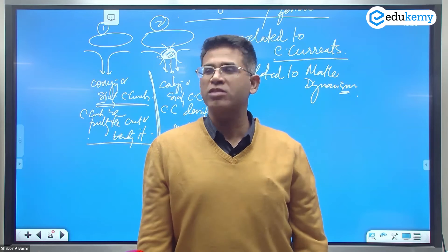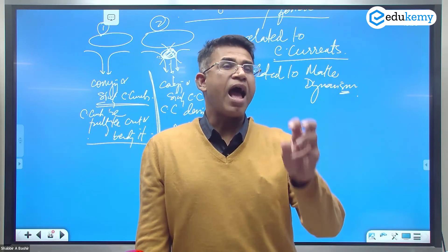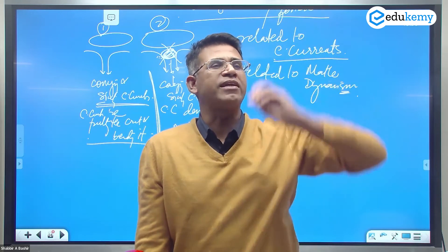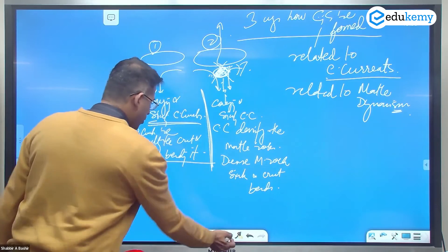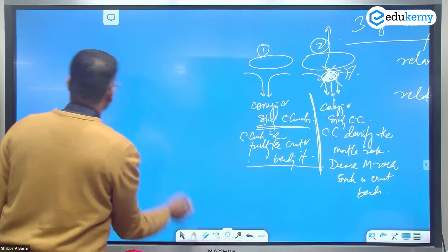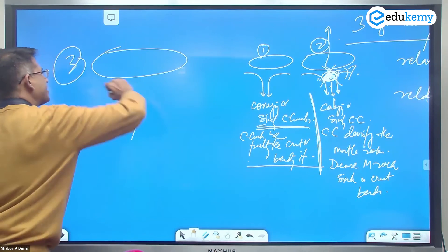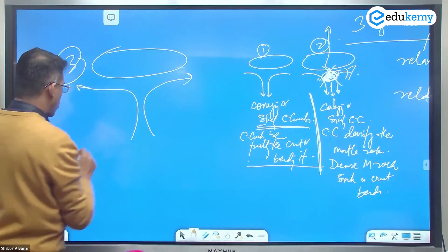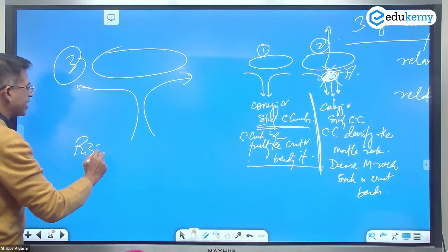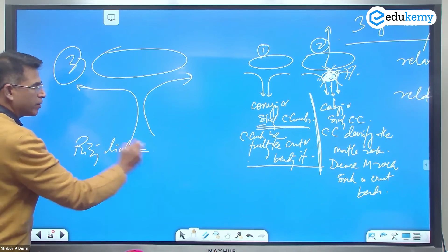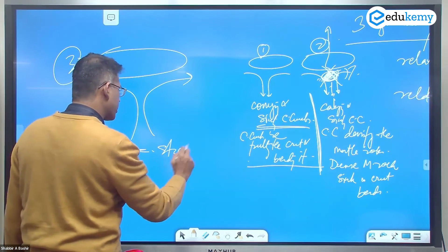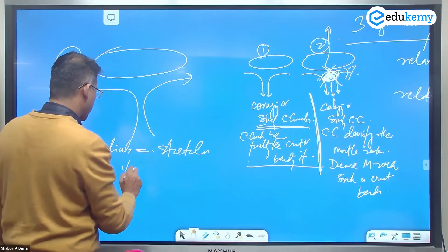The mountains are because of collision, accretionary prism rising. The third case was there's a crust, there's the rising limb. What does the rising limb do? It stretches the crust.